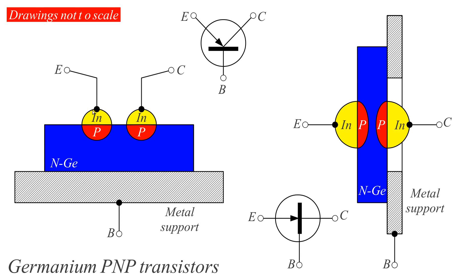The point-contact design was just pure theory and the first experiment with the transistor, but the sandwich design was actually a working device installed in many radios and other electronic equipment. Germanium was easier to use than silicon. From these two transistors also comes the symbol for the bipolar junction transistor. The first symbol comes from the initial point-contact design, while the second comes from this further developed practical transistor that was mass manufactured.